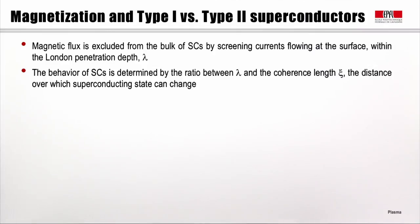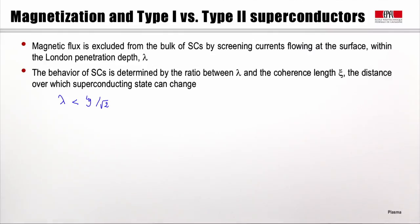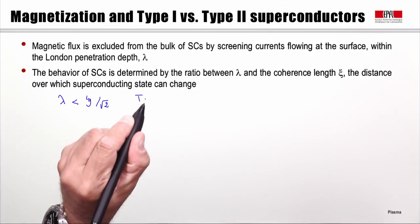We can now look at the magnetization and the distinction between type 1 and type 2 superconductors. The magnetic flux is excluded from the bulk of the superconducting material by screening currents that flow at the surface of the material, within a certain penetration depth called the London penetration depth, or lambda. The behavior of the superconducting material is determined by the ratio between this penetration depth lambda and the coherence length psi, which is the distance over which the superconducting state can change. In the type 1 case, the penetration depth is smaller than psi over the square root of 2.